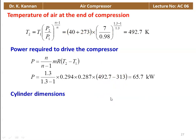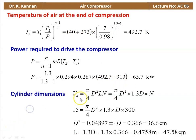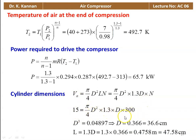Cylinder dimensions: the actual volume is 5 by 4 D squared into L, where L is given as 1.3 times D. The actual volume of air is 15 meter cube per minute, so using 5 by 4 D squared into 1.3D into 300 rpm, simplifying gives D cubed equal to 0.04897, so diameter equals 0.366 meter, which is 36.6 cm. And L equal to 1.3 times diameter, so 1.3 into 0.366 equals 0.4758 meter, which is 47.58 cm.